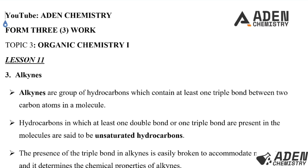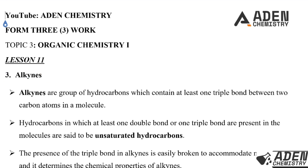Hello students, welcome. Previously in lesson 10, Form 3 Topic 3, we were dealing with the other chemical properties of alkenes. So today, lesson 11, we want to proceed to the third class of hydrocarbon which is alkynes.